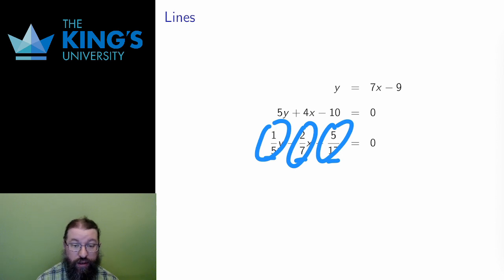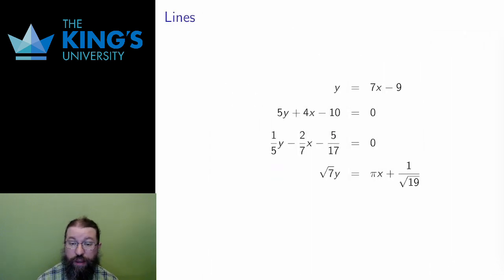I could take the line square root 7y equals pi x plus 1 over the square root of 19. The constants can be any real numbers, including square roots or irrational numbers like pi.